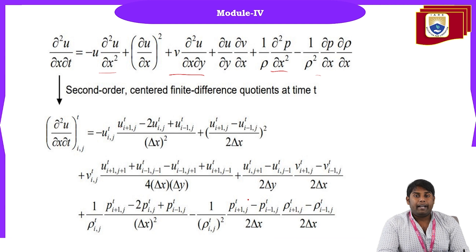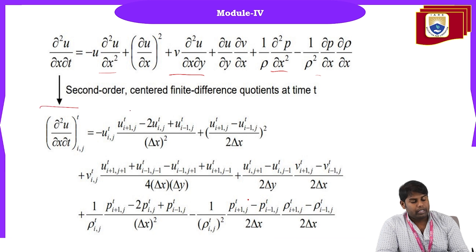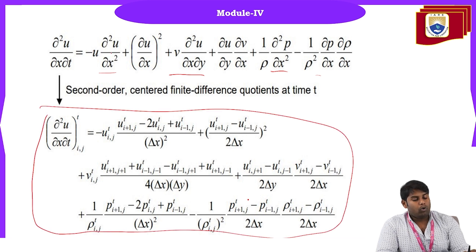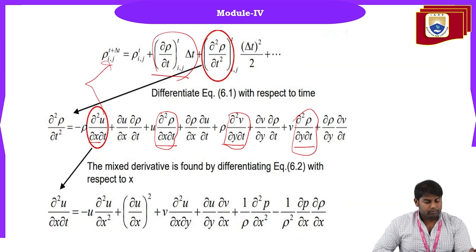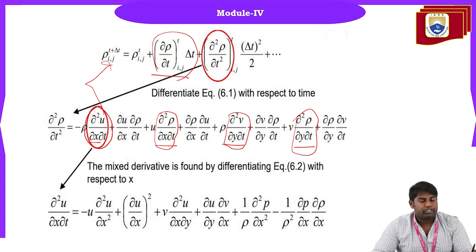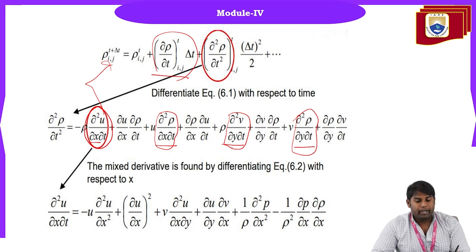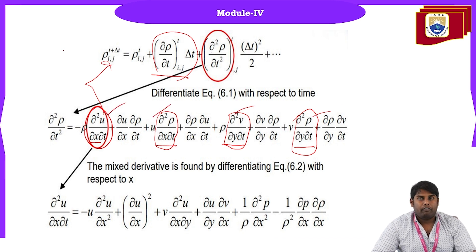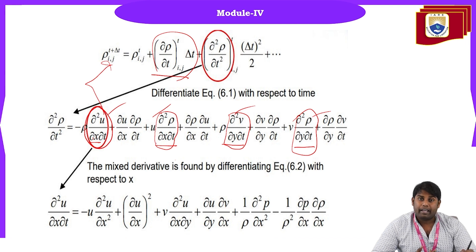Getting these mixed derivative terms is very hectic. When we differentiate the x-momentum equation with respect to x, we get second-order derivative terms, mixed derivative terms with respect to x and y, and second-order derivative terms for all expressions. Writing the finite difference formulation for these second-order and mixed derivatives results in a very lengthy expression — and this is just for one term, ∂²u/∂x∂t. Additionally, we still have ∂²ρ/∂x∂t, ∂²v/∂y∂t, and ∂²ρ/∂y∂t to evaluate. When we substitute these, the expressions become increasingly lengthy.